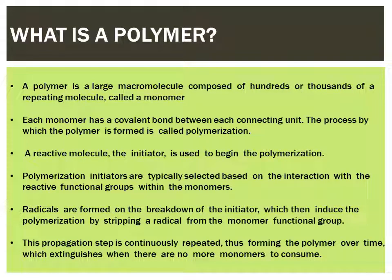Before that, let's first understand what is a polymer. A polymer is a large macromolecule composed of hundreds or thousands of repeating molecules called monomers, and these monomers are connected to each other with the help of covalent bonds. This process by which the polymer is formed is called polymerization. The polymer is formed by repeated bonding of the monomers with each other, forming a chain, and that formation of the polymer chain is called polymerization.